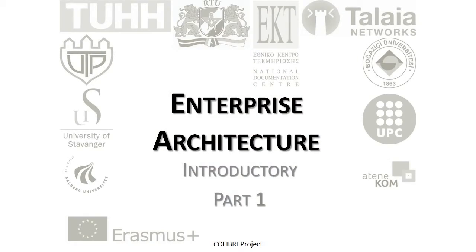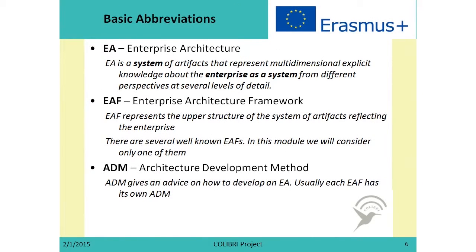Let us proceed to the first part of the introductory part of the Enterprise Architecture module, starting with some basic abbreviations used throughout the module. The first is EA, which stands for Enterprise Architecture. We define Enterprise Architecture as a system of artifacts that represents multidimensional explicit knowledge about the enterprise as a system, from different perspectives at several levels of detail.